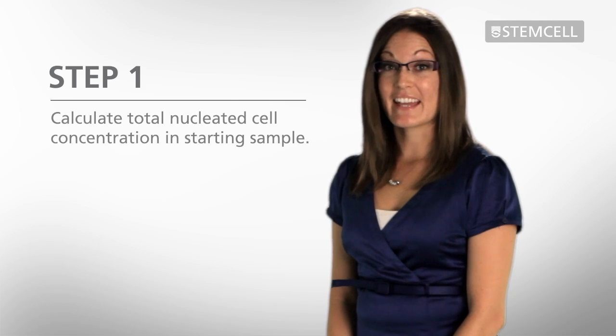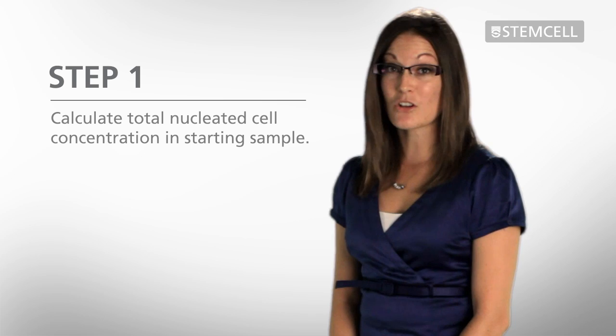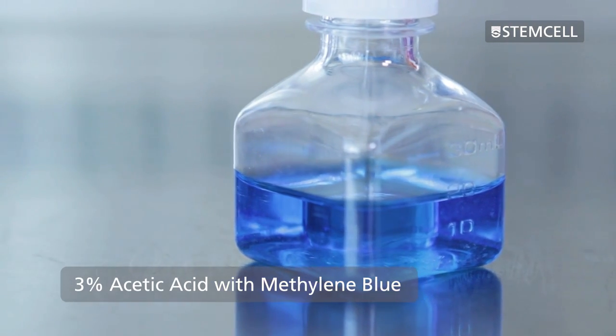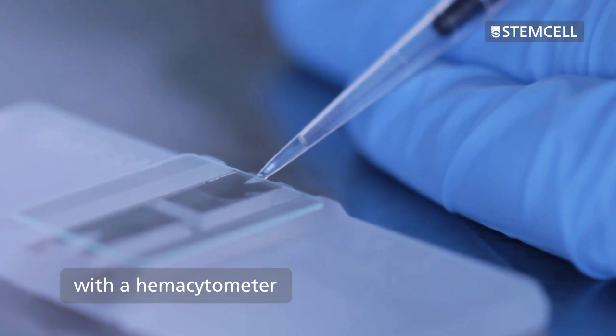The first step in the HetaSep small volume protocol is to determine the total nucleated cell concentration in your starting sample. We recommend using 3% acetic acid with methylene blue and a hemocytometer to count the cells. An automated cell counter can also be used.